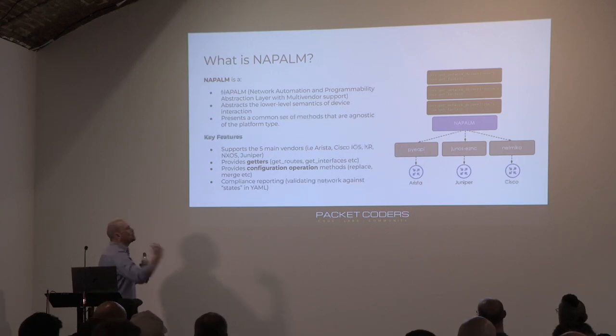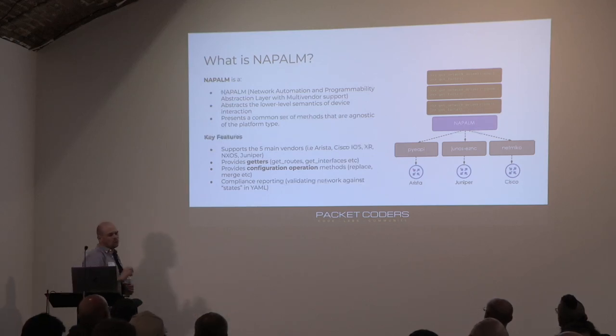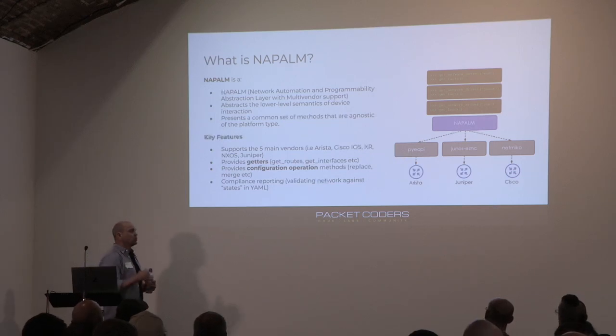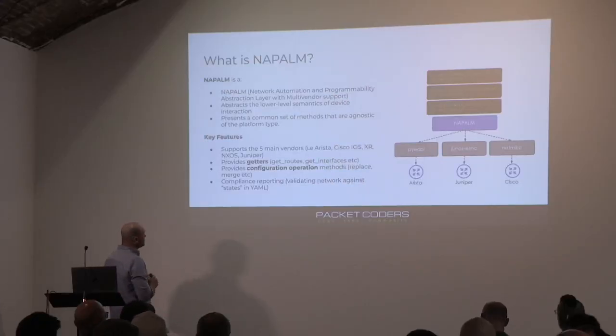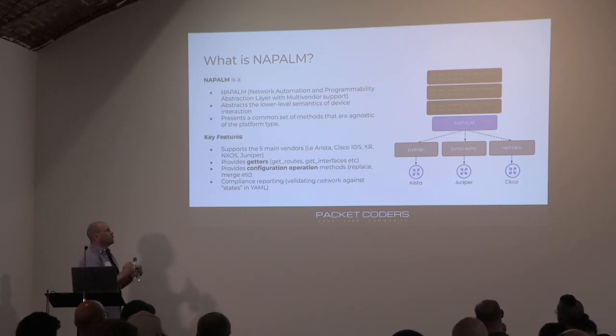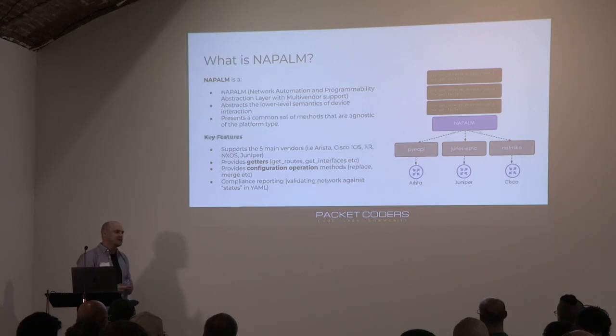You just use a common set of methods within NAPALM. The two main things you can do are: config operations — replacing config, merging config — which is really mature and works great; and getters, which let you get information from your network such as routes and interface data. That data comes back to you as structured data, without worrying about whether it uses a Genie template, TextFSM, or what commands are used.